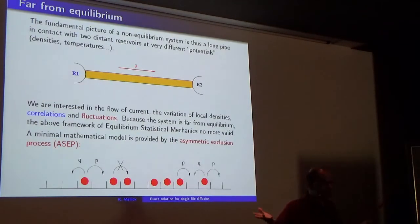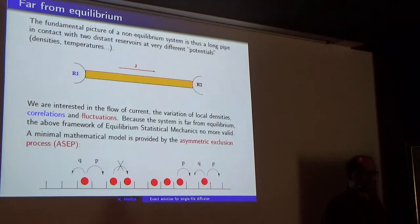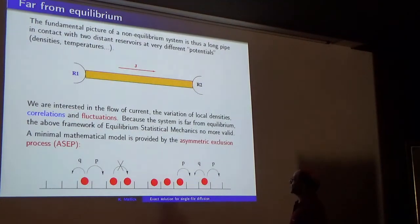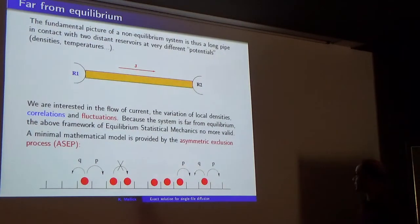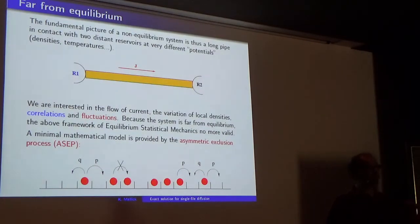If you go far from equilibrium — so now the two reservoirs are very different, very different temperatures, we are beyond the linear regime — you cannot use classical results in statistical mechanics which are valid only in the vicinity of equilibrium. So you have to go further and do something else. In this context, one minimal model, first investigated in our field by Katz, Lebowitz, and Spohn in the 80s, but invented before by a mathematician, is the so-called asymmetric exclusion process, ASEP.